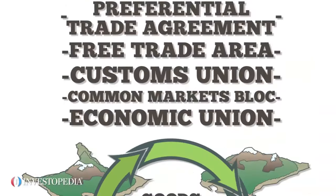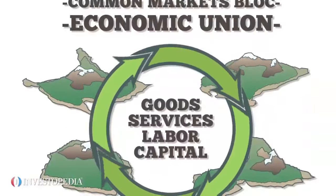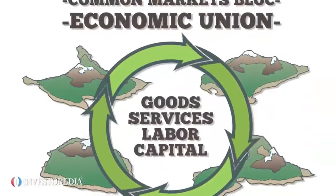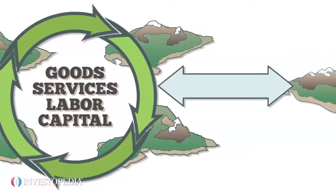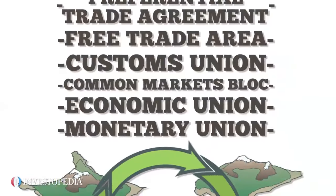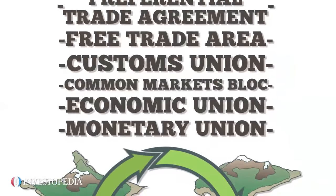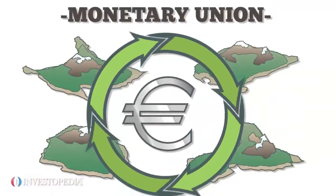An economic union is a common markets block among members that also share one trade policy with non-members. And in a monetary union, nations share a single currency, such as the euro.